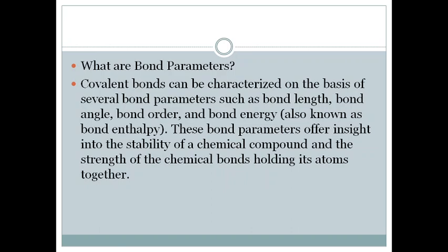Covalent bond characterization can be done using these bond parameters: bond length, bond angle, bond enthalpy, and bond order. These bond parameters offer insight into the stability of a chemical compound and the strength of the chemical bonds holding its atoms together.